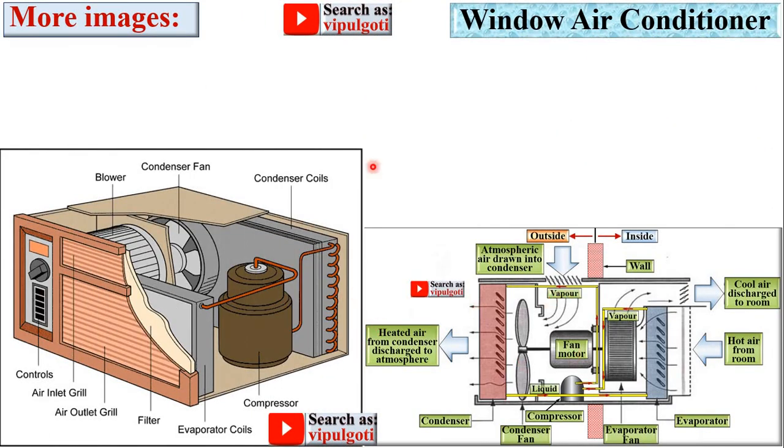More images to understand the window air conditioner. So here you can see thermostat with the control system, and this one is the grill for air inlet, and this one is the grill for the air outlet.